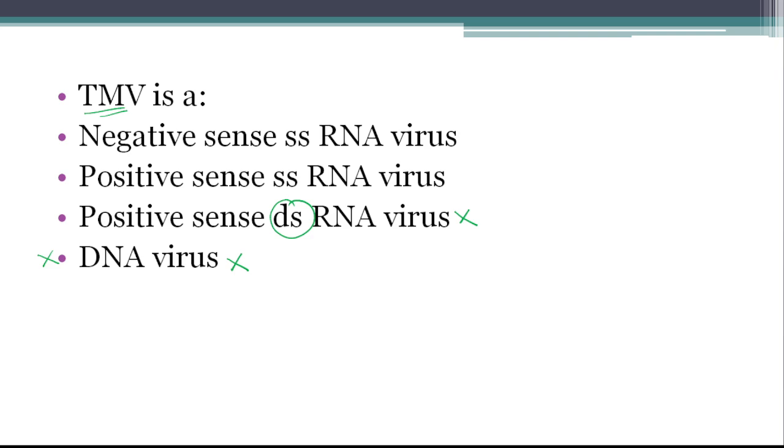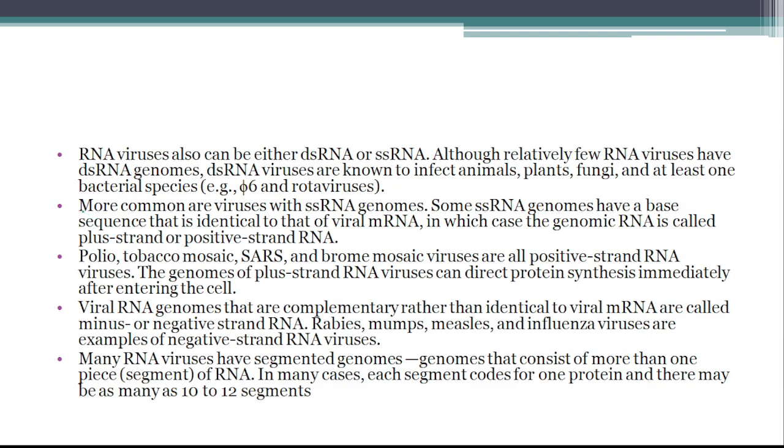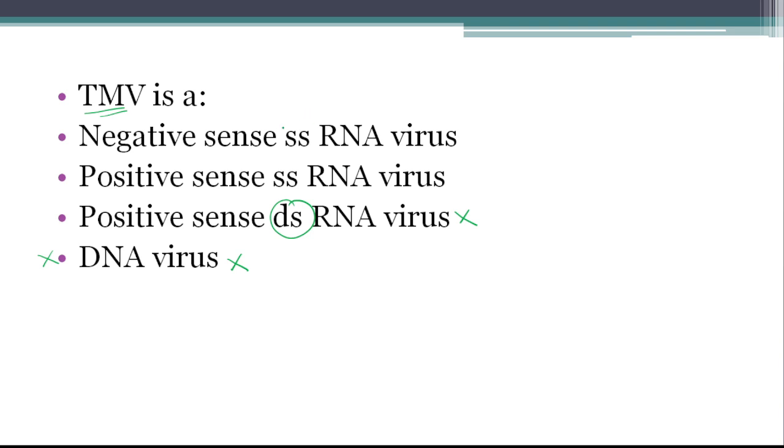So we studied this yesterday. If you remember, more common are viruses with single-stranded RNA genomes. Some single-stranded RNA genomes have a base sequence that is identical to that of viral mRNA. In which case, the genomic RNA is called plus-strand and positive-strand RNA. The single-stranded genome is identical to viral mRNA. In that case, we call them positive-strand and plus-strand RNA. Here are examples given here: polio virus, tobacco mosaic virus, SARS virus. So here TMV is a positive sense single-stranded RNA. So our option is second correct here.